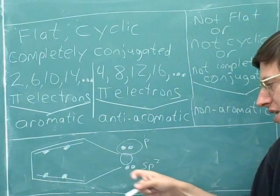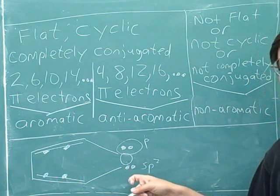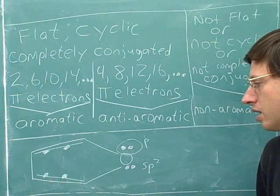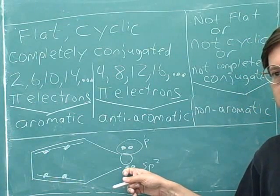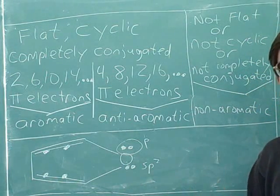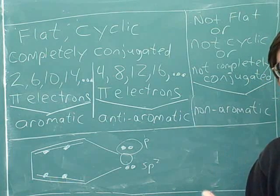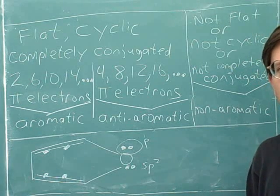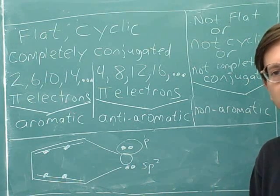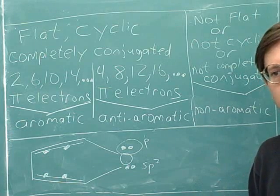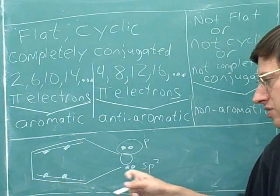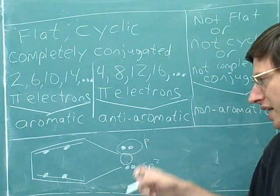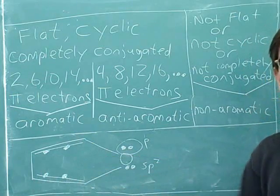This lone pair must be in an sp2 orbital, so I'm not going to circle these because they're not in a p orbital — they must be in one of the three sp2 orbitals. So do these electrons count as pi electrons? No, because pi electrons are the electrons in side-to-side overlapping p orbitals. Remember that pi is the Greek letter for p. You can only have pi electrons when you're in a p orbital. This is not a p orbital, so these are not pi electrons. These are pi electrons because they are in a p orbital that can have side-to-side overlap with the p orbitals over here.